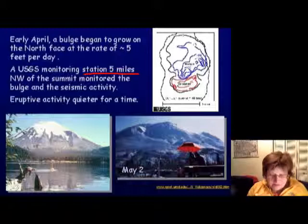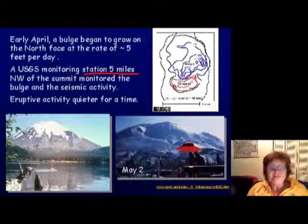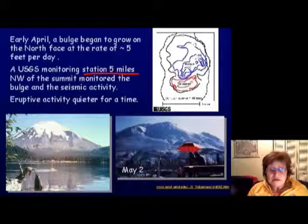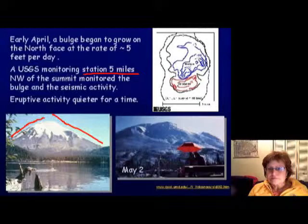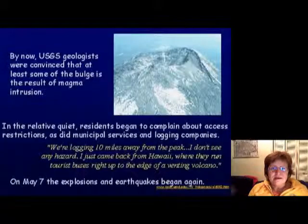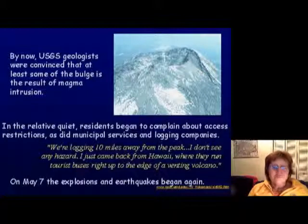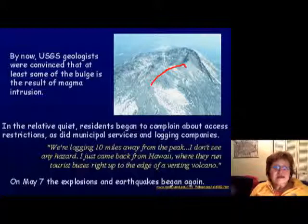When signs appear, you have to evacuate people and close roads, and you might have to wait months — but when you have harmonic tremor, it's almost 100% certain an eruption will follow. Mount St. Helens was a beautiful snowy mountain before the eruption, and the USGS geologists were 100% certain an eruption would occur because of the bulge growth.